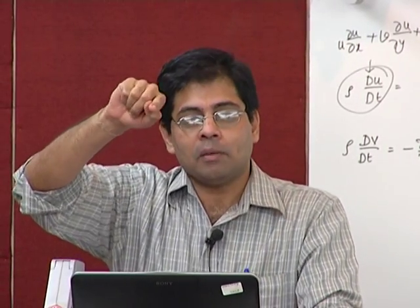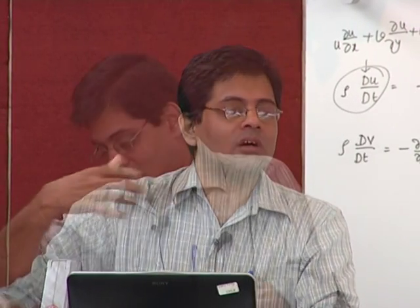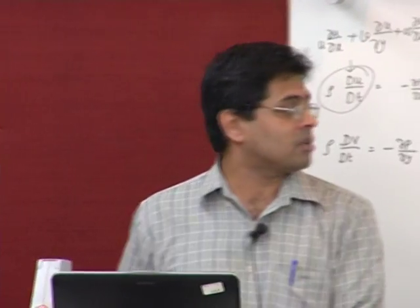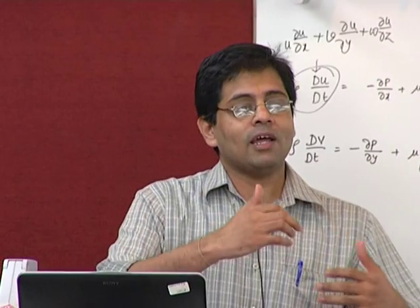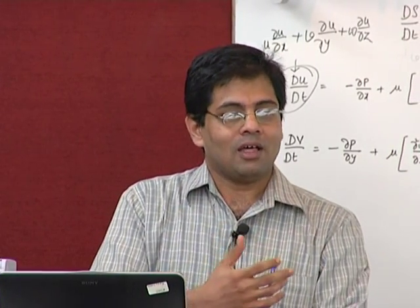He showed one form: u du by dx is equal to minus 1 by rho dp by dx. That equation is the balance essentially. As one side is going to increase, the other is going to be affected and will come to 0.